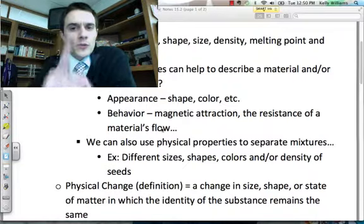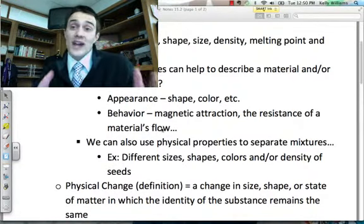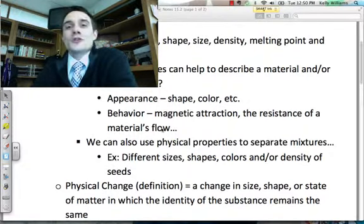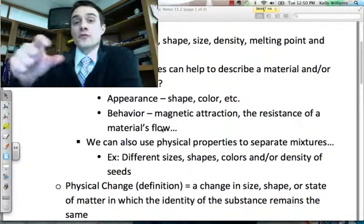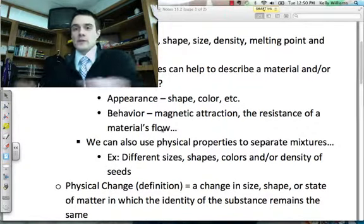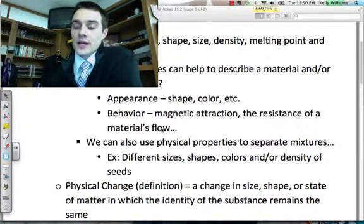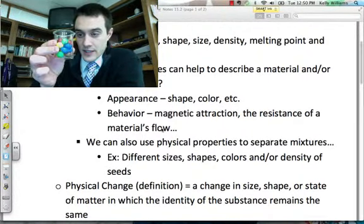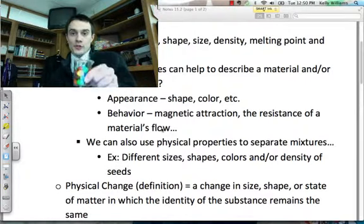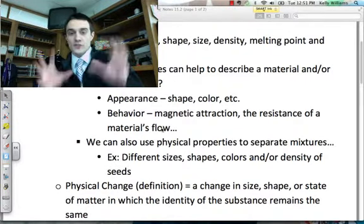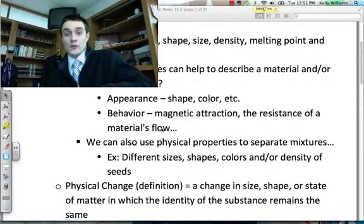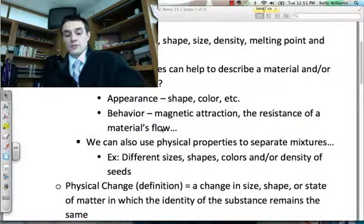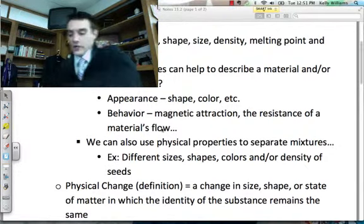We can also use physical properties to help separate mixtures. You had a mixture at lunch today. You had some tropical fruit mix. You could actually observe the physical properties of the different pieces of fruit to separate them into maybe some different categories. We could also take this mixture right here, these peanut M&Ms that are in this glass beaker, and we could use a physical property to separate this mixture. Physically separate it. I could use a physical property of color. And I could get my group of greens. Got my group of greens right here.